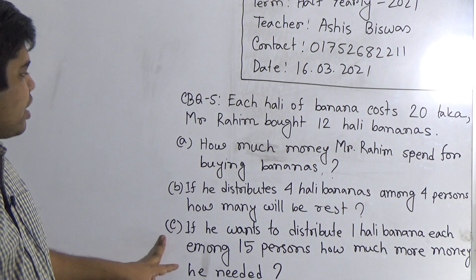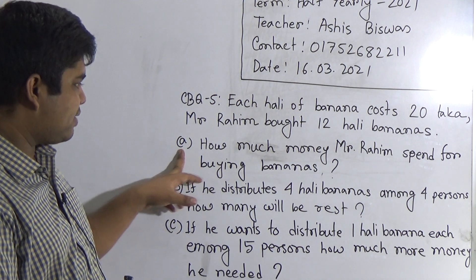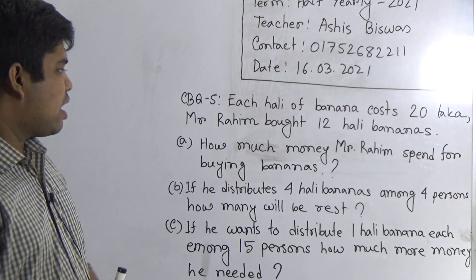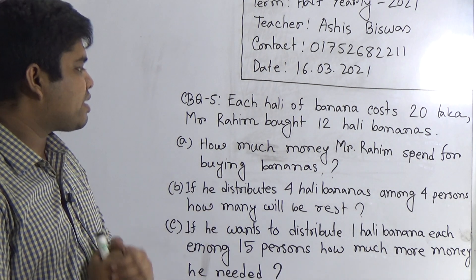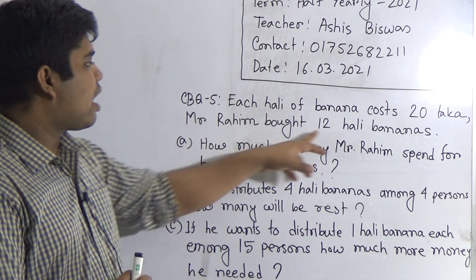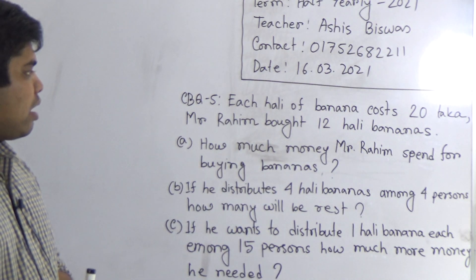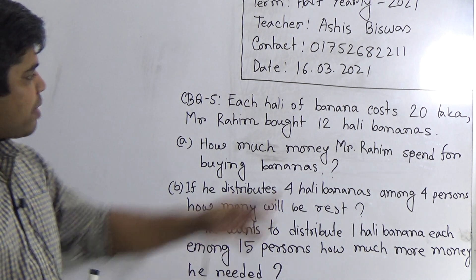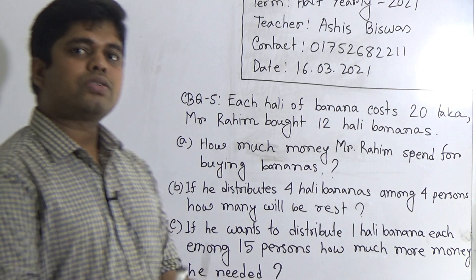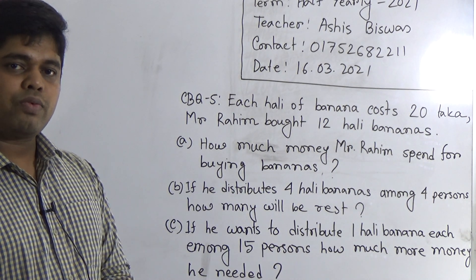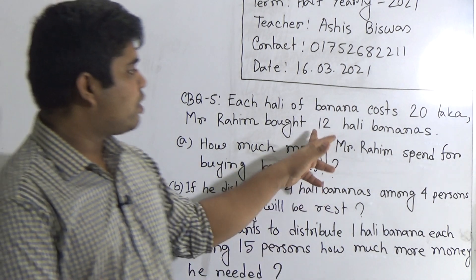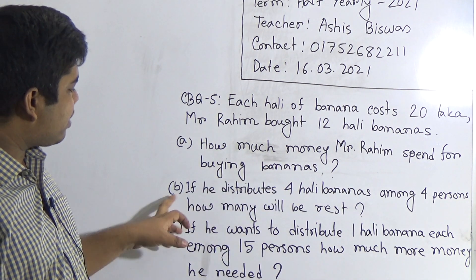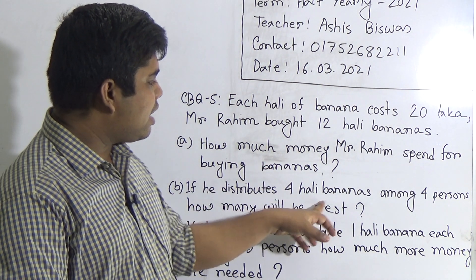Question A: How much money did Mr. Rohim spend for buying bananas? That means, Mr. Rohim spent how much money to buy 12 hali bananas, because he bought 12 hali bananas. We know the price of 1 hali banana is 20 taka. So the price of 12 hali bananas — for this, multiplication will happen. If we multiply 12 with 20, then we get the answer of question A.